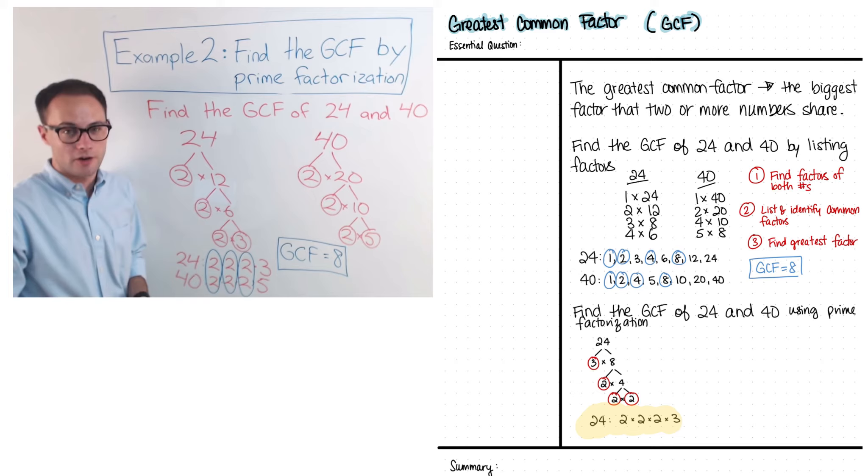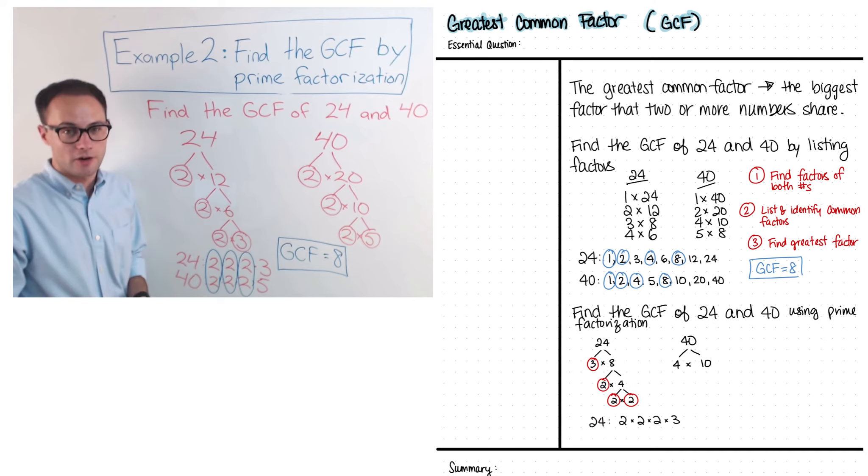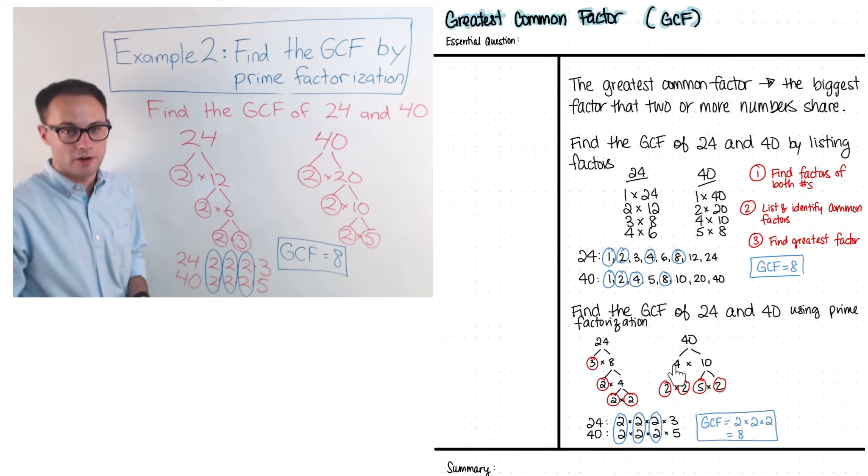Now, pause the video and why don't you try to do the prime factorization of 40 with the factors of 4 and 10. Hopefully, you got 4, can be 2 times 2, which are prime factors. Then, 10 is 5 times 2, which are also both prime factors. So, the prime factorization of 40 is 2, 2, 2, and 5. Great! So, we got the same answer, but in a different way.